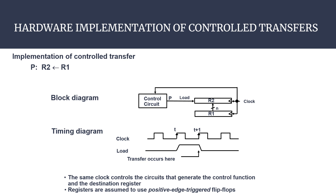The control circuit generates the value of P. It can incorporate any type of digital module according to requirements. When the P value computed by the control circuit equals 1, it is applied to the load signal of register R2. When the load signal of R2 goes high, the contents of R1 are transferred into register R2.